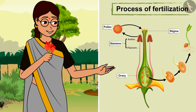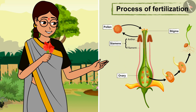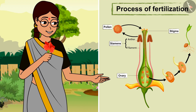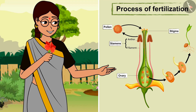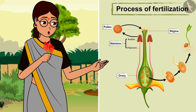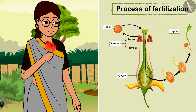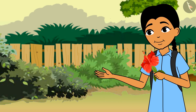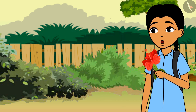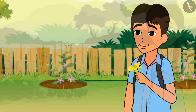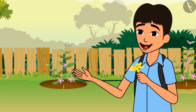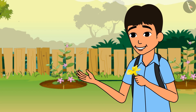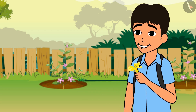When the pollen reaches the stigma, they travel through a tube-like structure to the ovary. Here, the fertilization takes place. The ovary becomes the fruit and the other parts of the flower wither and fall off. It is very interesting. I used to think that the role of the flower is only to provide a good smell. But it is because of the smell of the flowers that the honeybees and butterflies are attracted towards them.